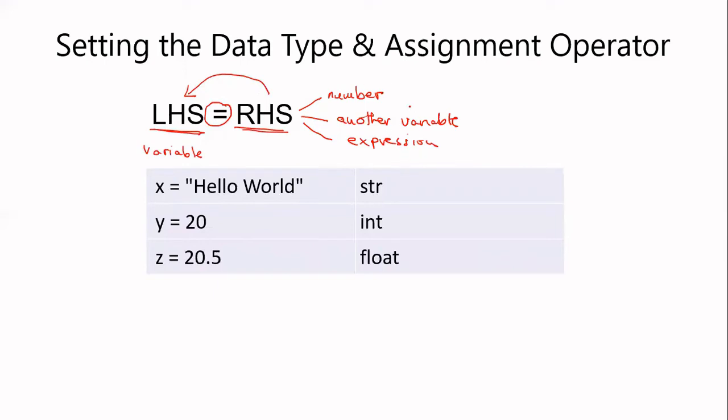So this is how the assignment works. We have something on the right-hand side and it's stored on the left-hand side. In this first example, we've got the variable on the left-hand side, x. And we are storing a value on the right-hand side, which is hello world. It's a string. So the value that we are storing into this variable, Python will now see it as a string variable.